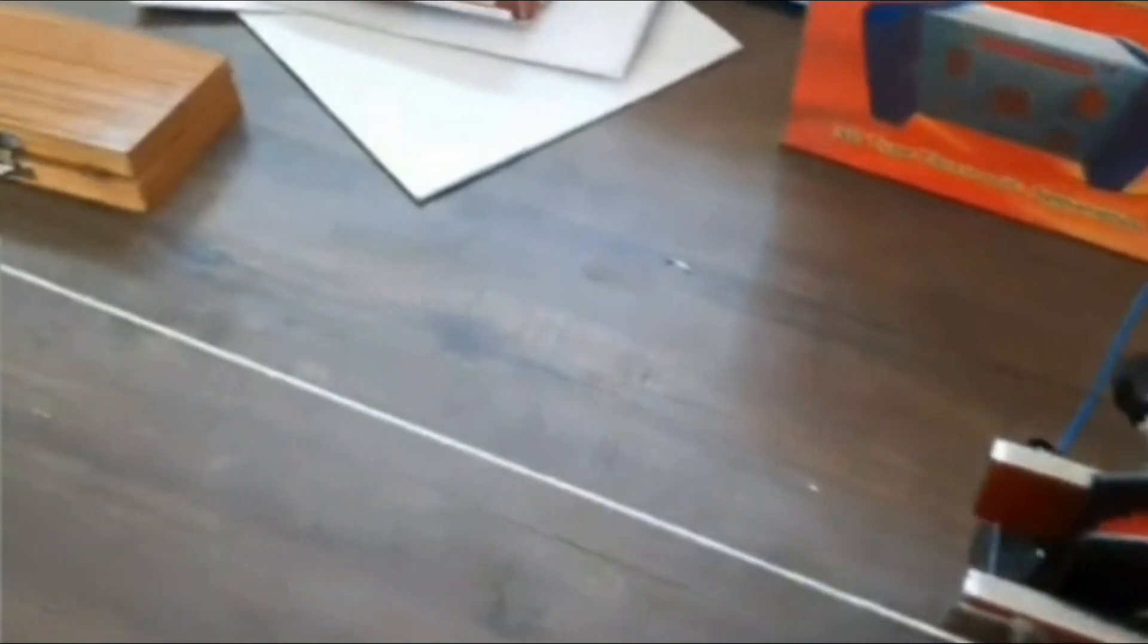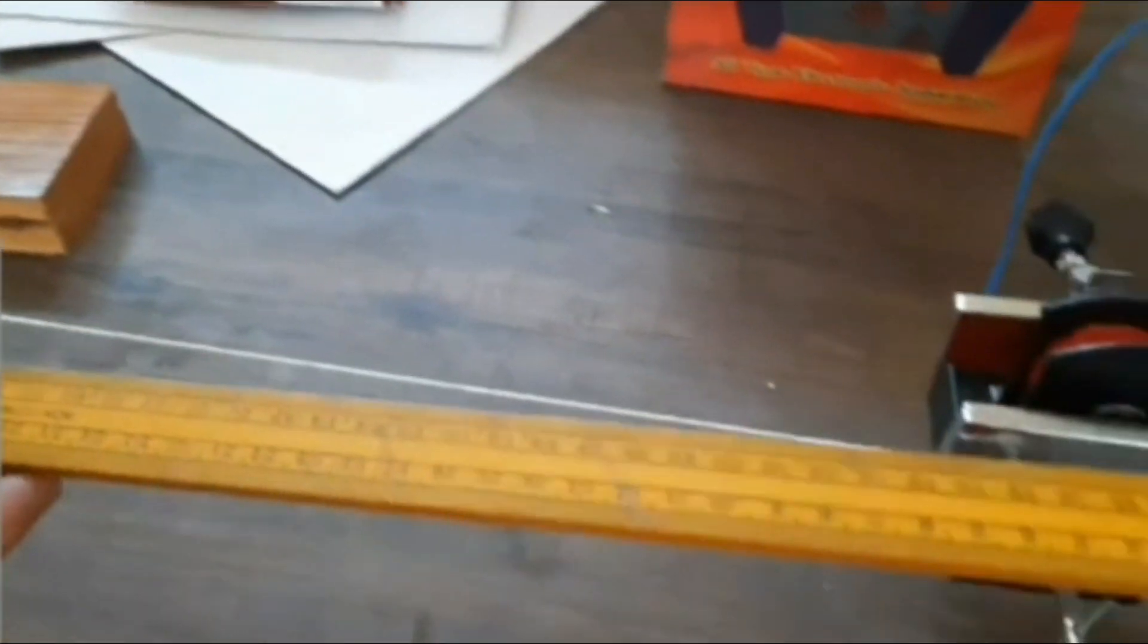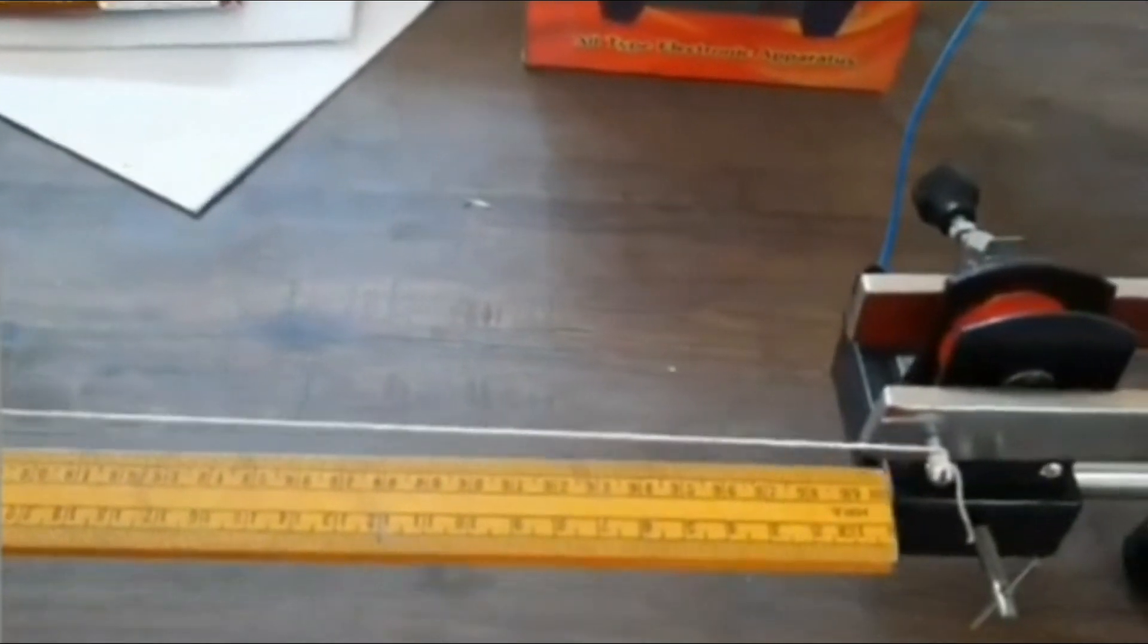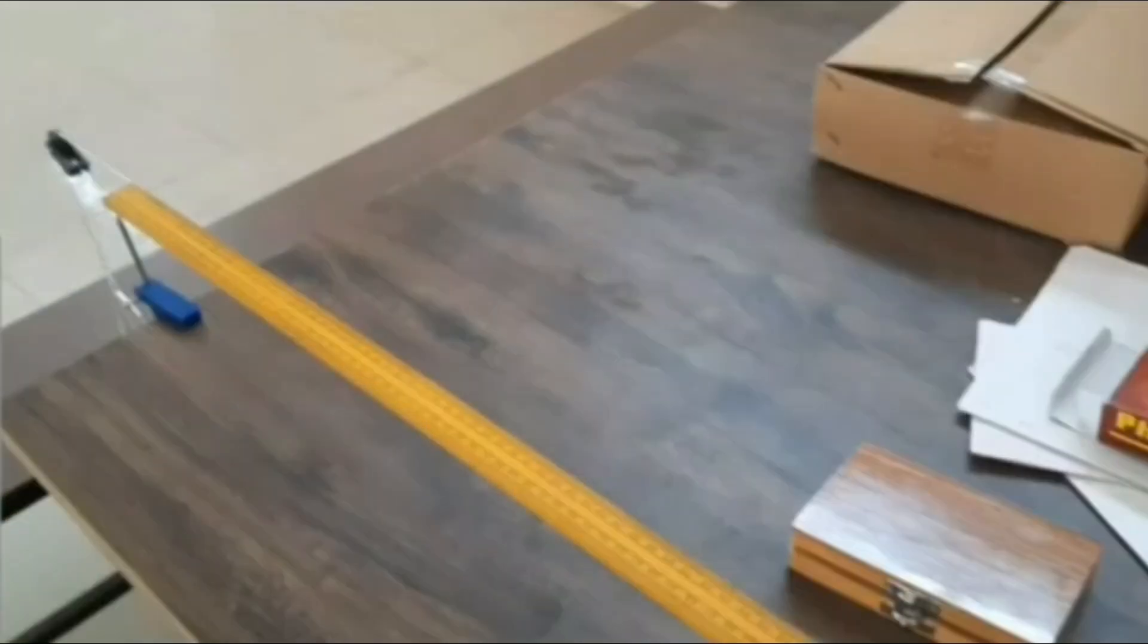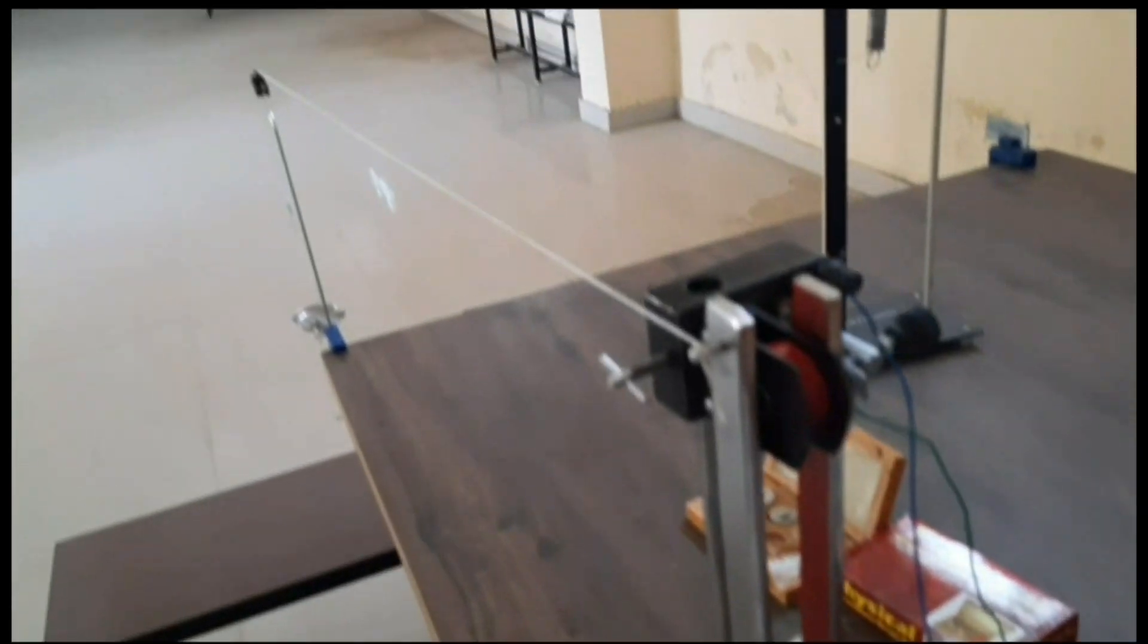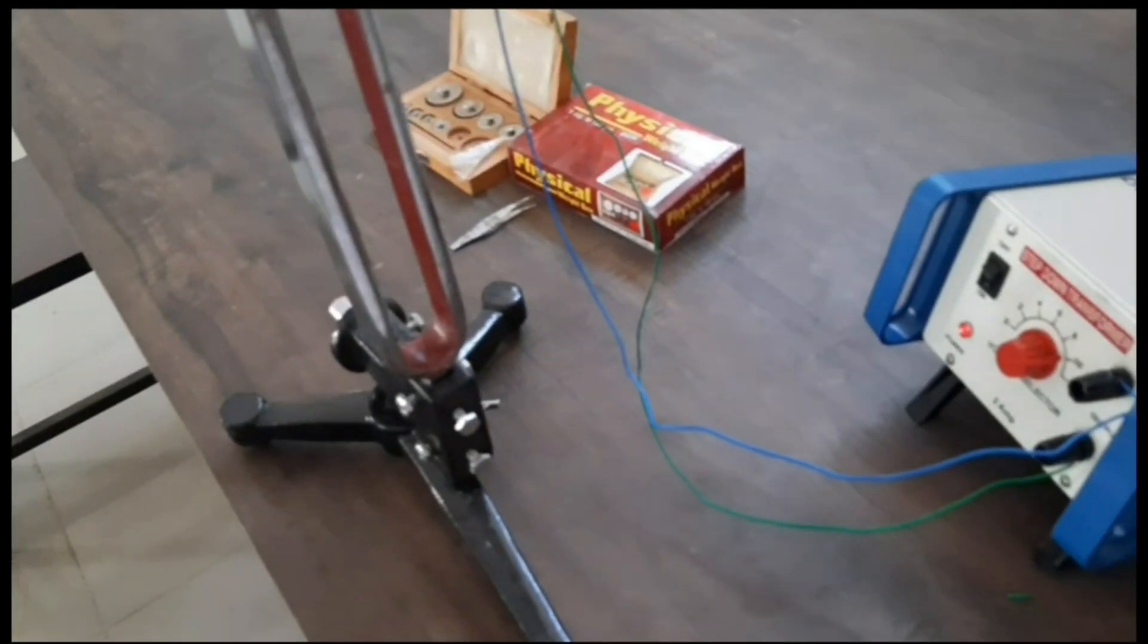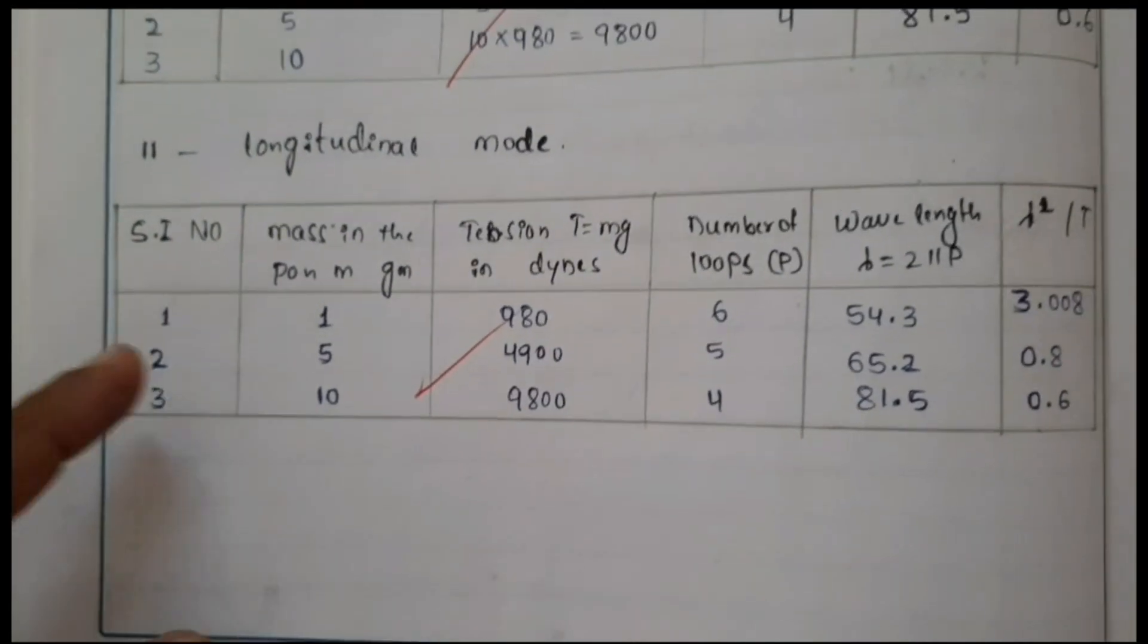Before that we should measure the length of this string or the wire using this scale. Once the number of loops are produced for the applied weight, note down the values in the tabular column.